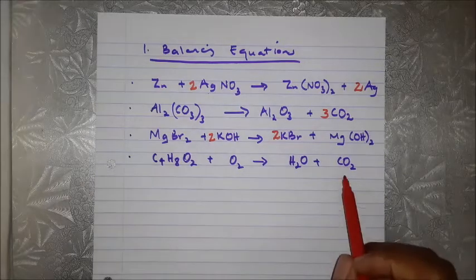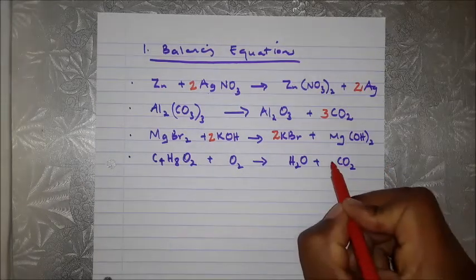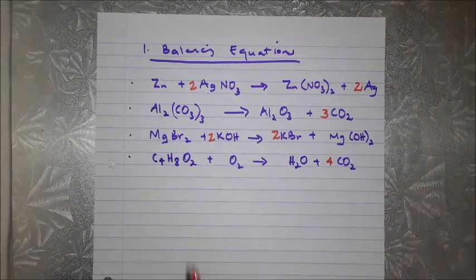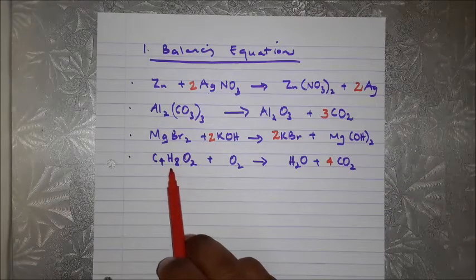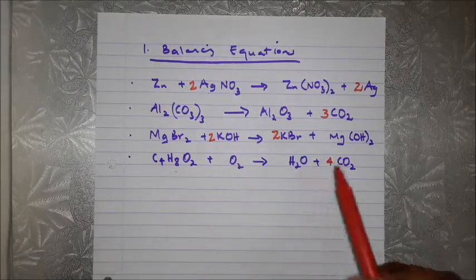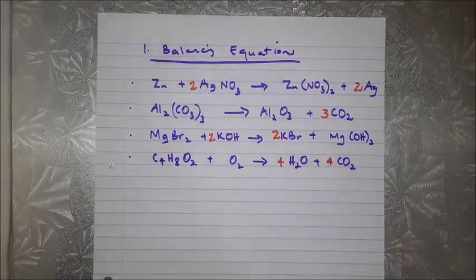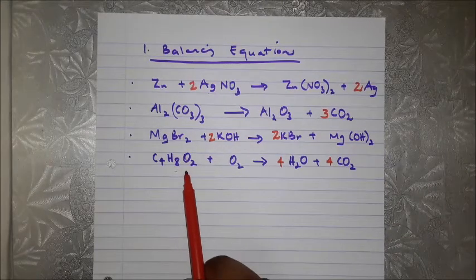For carbon: there are 4 carbons on the reactant side but only 1 on the product side, so we put a 4 in front of CO₂ — carbons are balanced. For hydrogen: there are 8 hydrogens on the reactant side but only 2 in H₂O, so we put a 4 in front of H₂O to give 8 hydrogens — balanced.